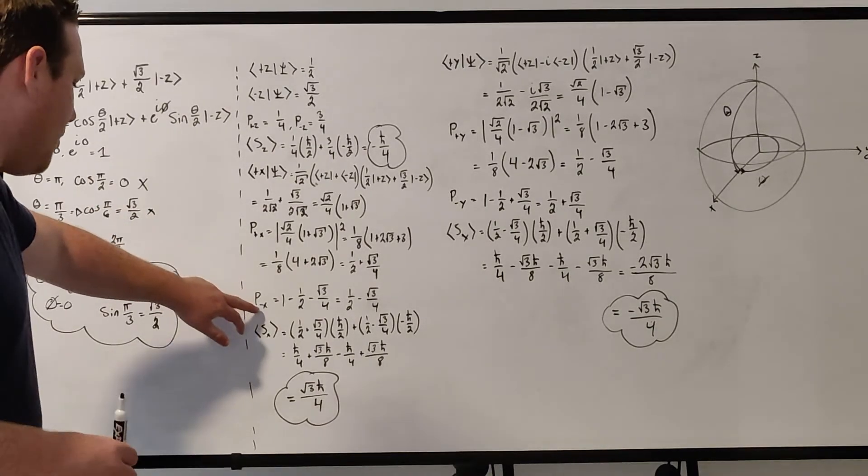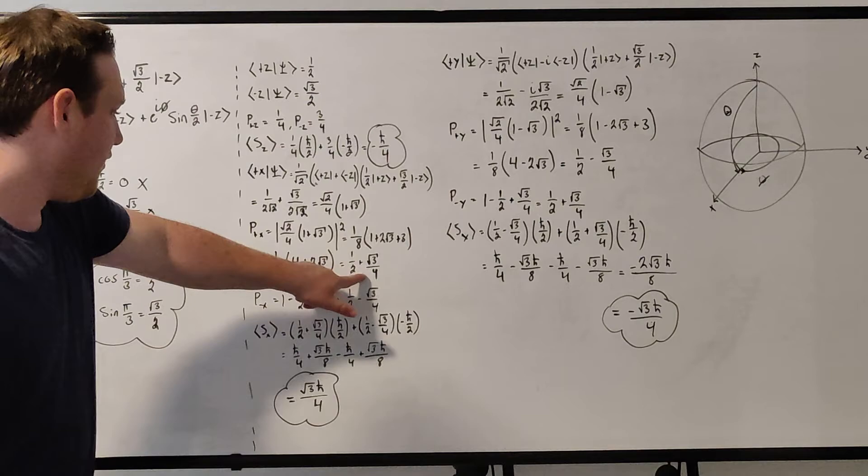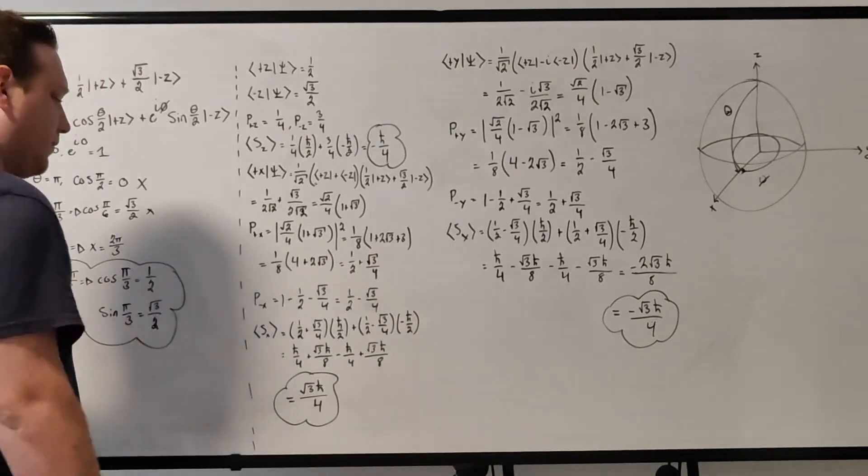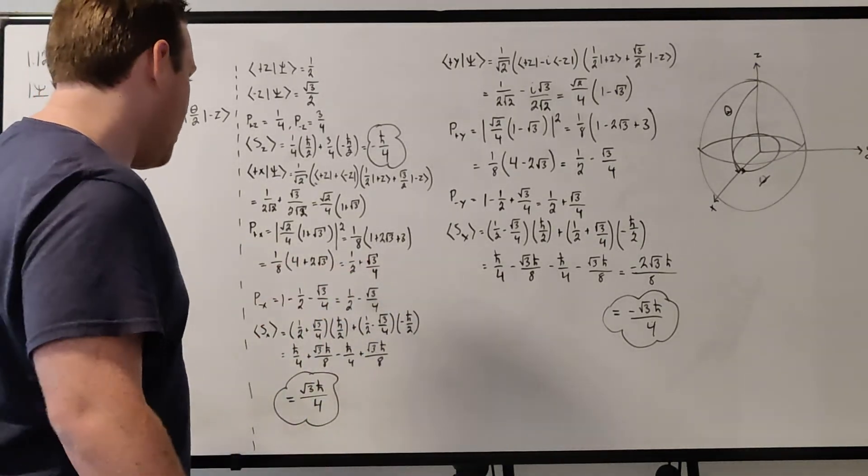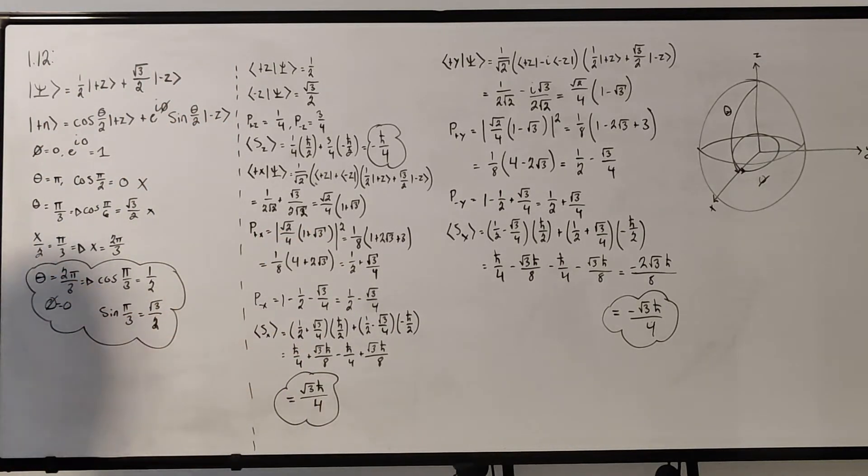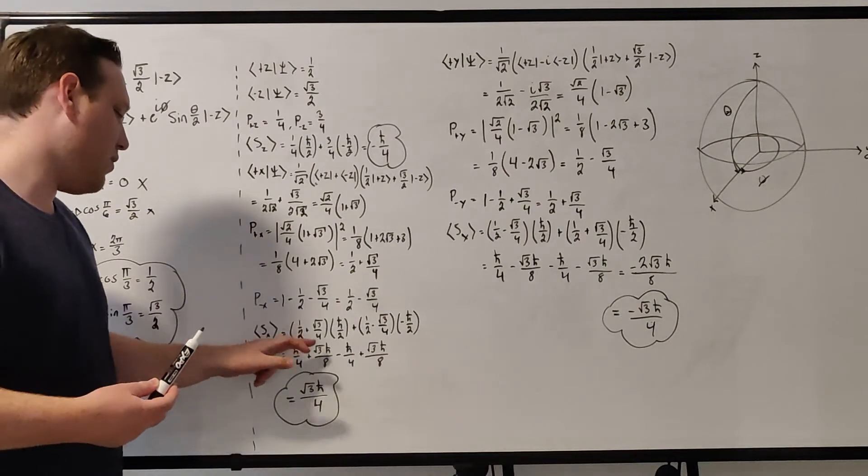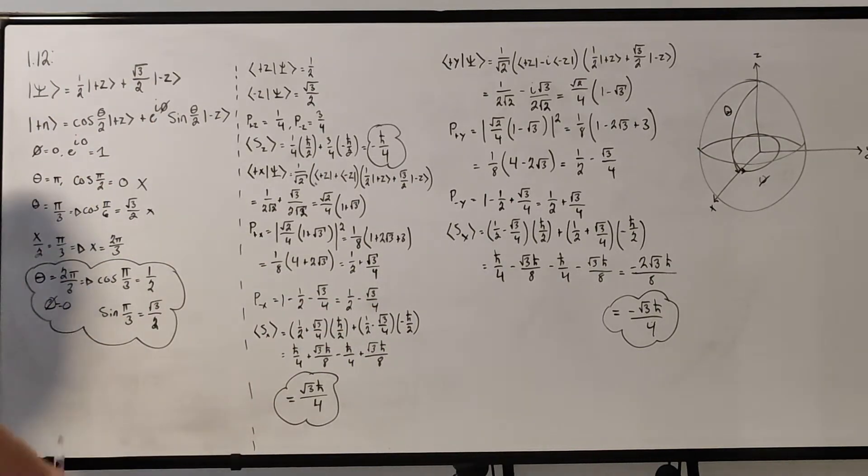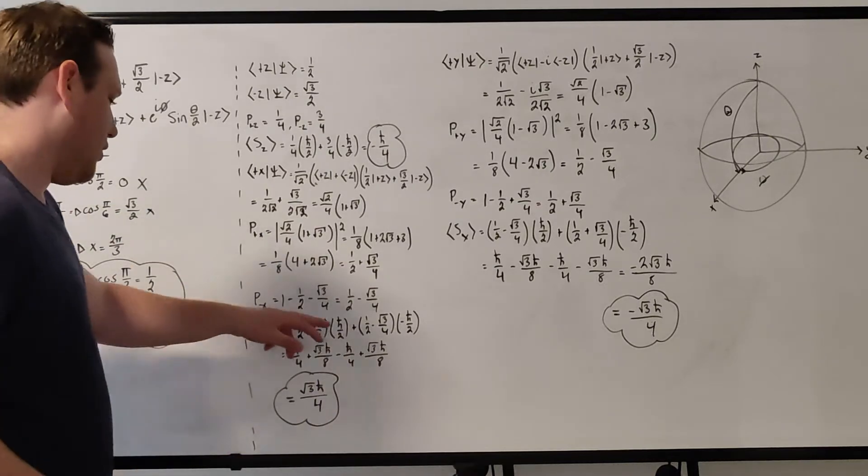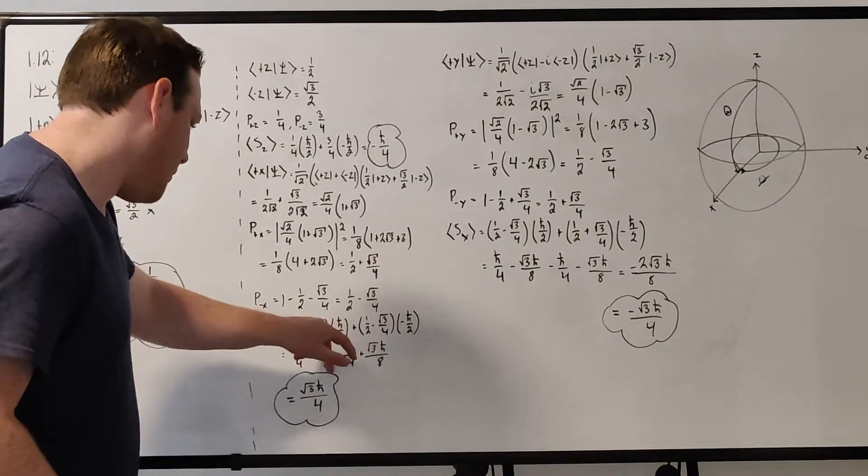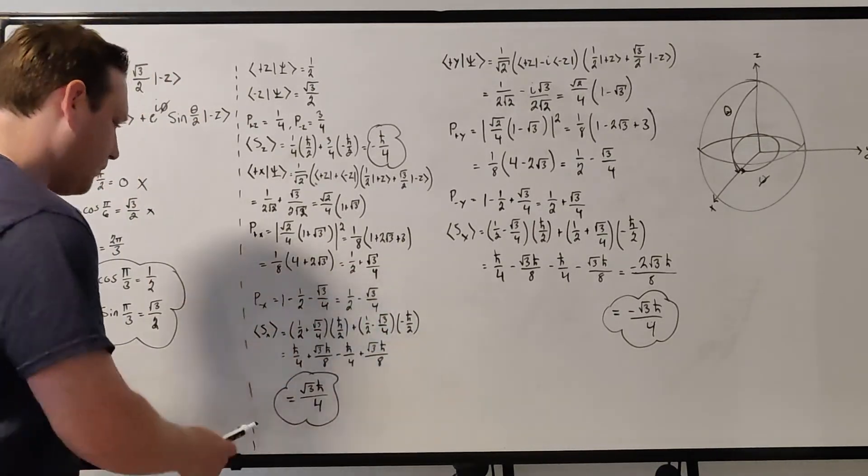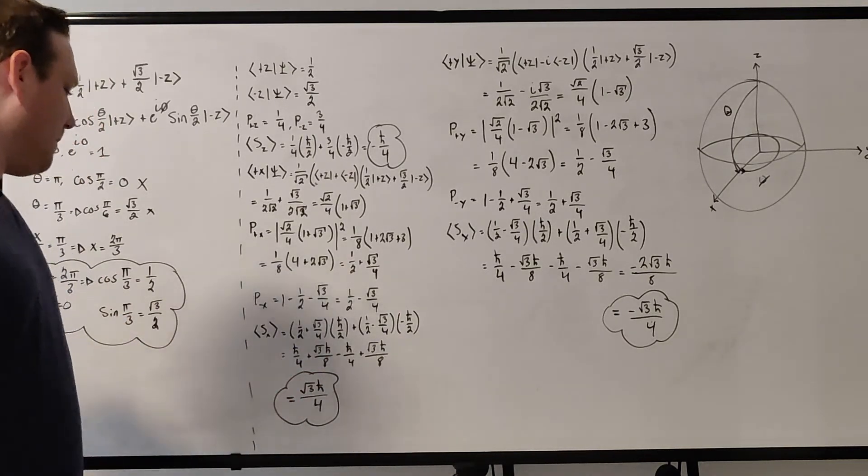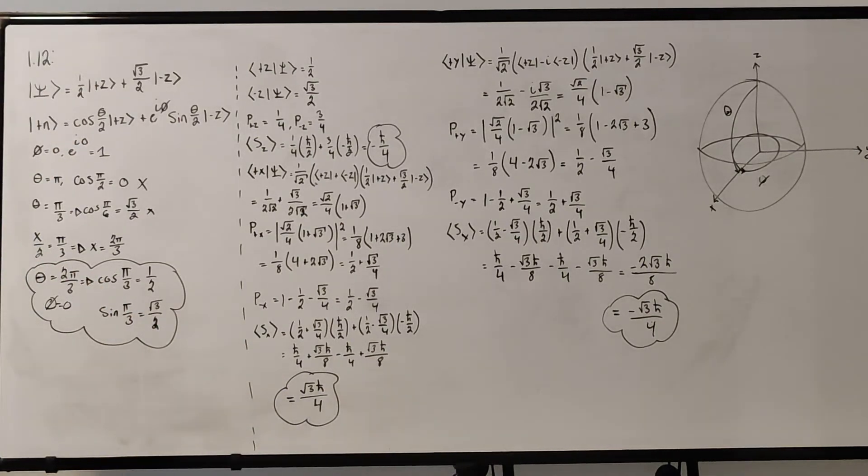And then to find the other half, to find the probability for minus x, we just take our probability for plus x and subtract it from 1. So we get 1 minus 1 half minus root 3 over 4, and that gives us 1 half minus root 3 over 4. So we have our two probabilities. Plug them into the expectation value equation. We get 1 half plus root 3 over 4 times h bar over 2, plus 1 half minus root 3 over 4 times minus h bar over 2. And just doing the multiplication here, we're going to have h bar over 4 plus root 3 h bar over 8 minus h bar over 4 plus root 3 h bar over 8. The h bars over 4 cancel. You get 2 root 3 h bar over 8, which is just root 3 h bar over 4. So that is now our expectation value for the x component.